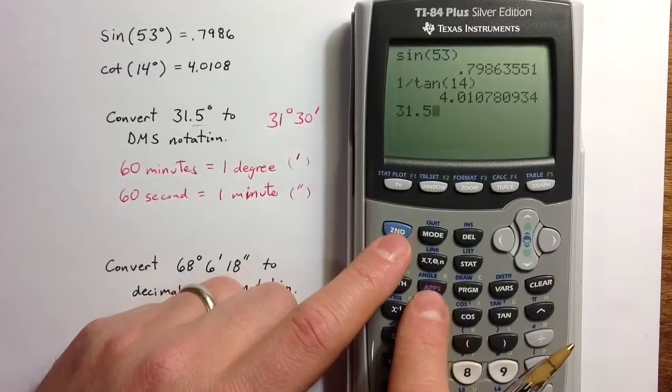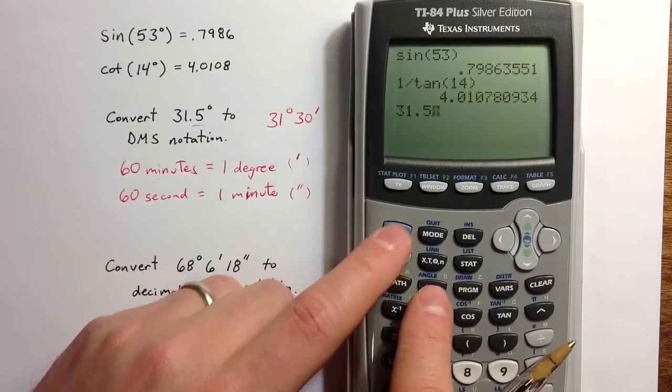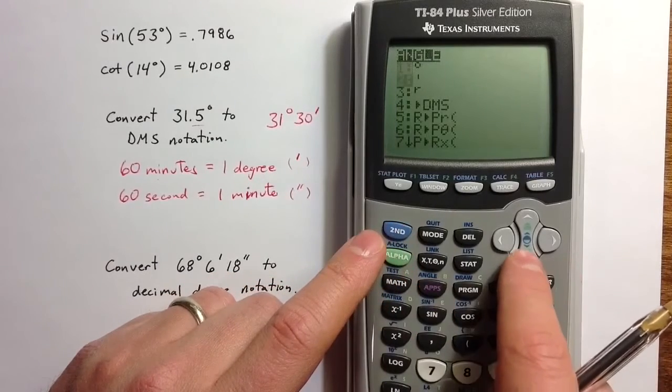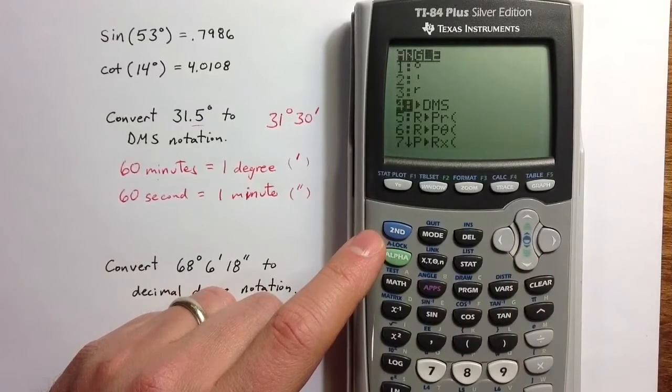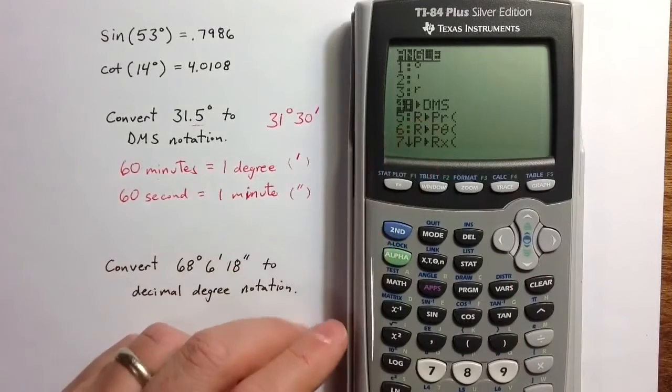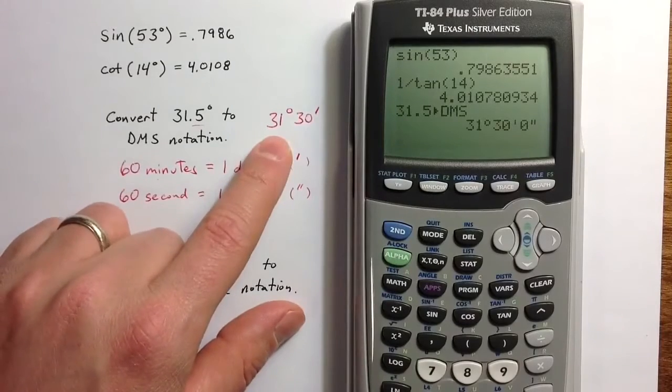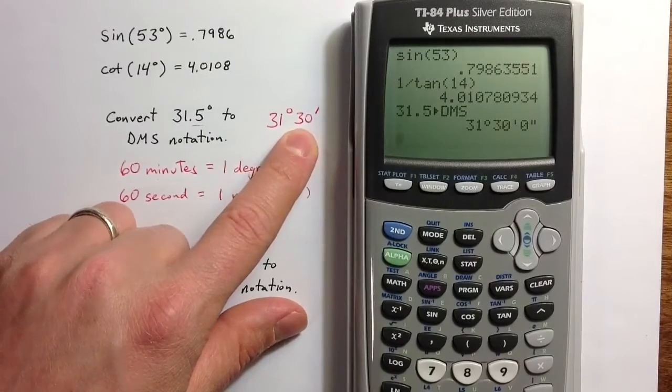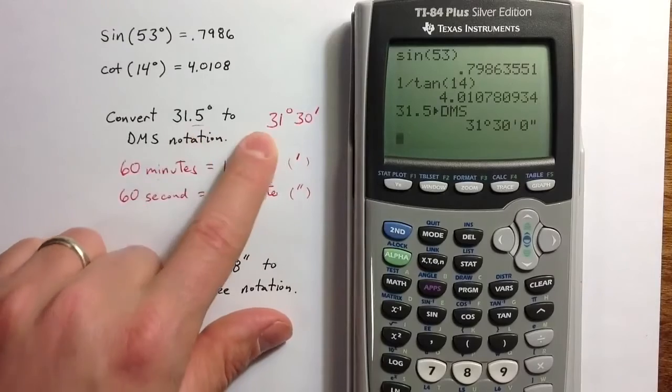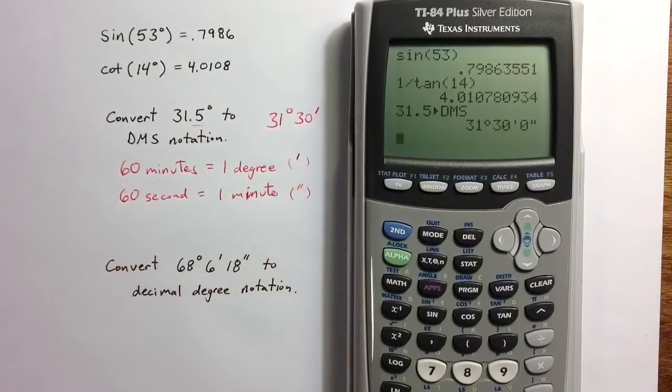and choose option 4, the DMS conversion command, and we can see that 31.5 degrees is in fact 31 degrees and 30 minutes.